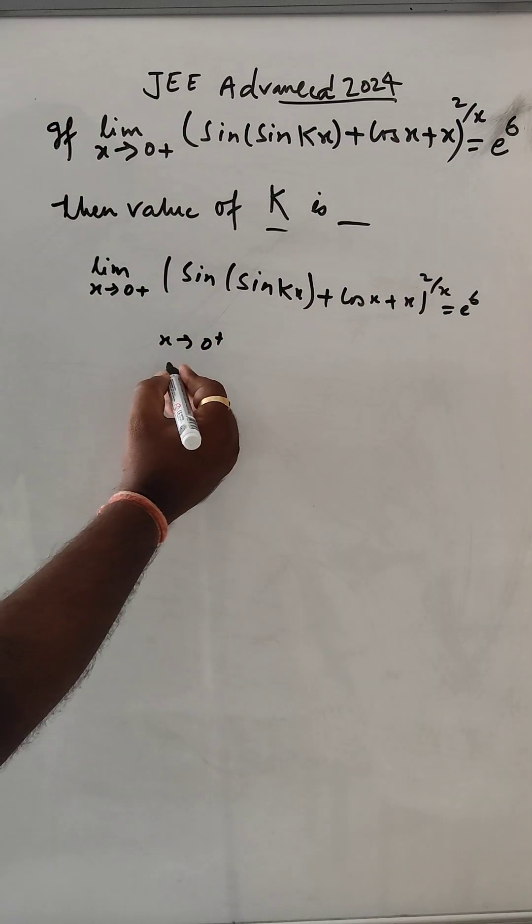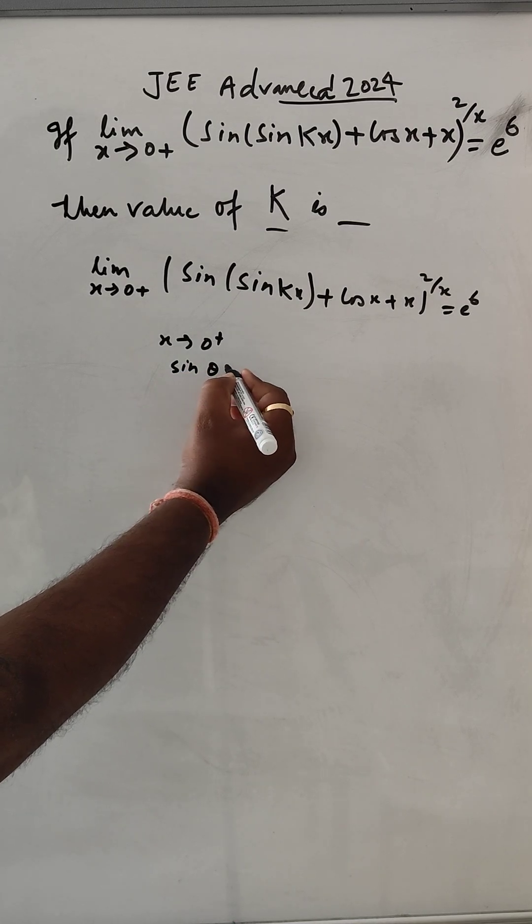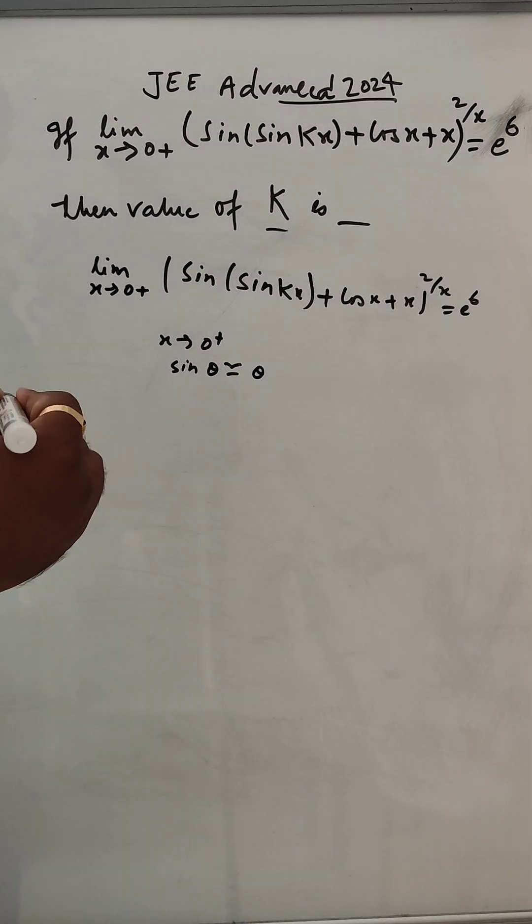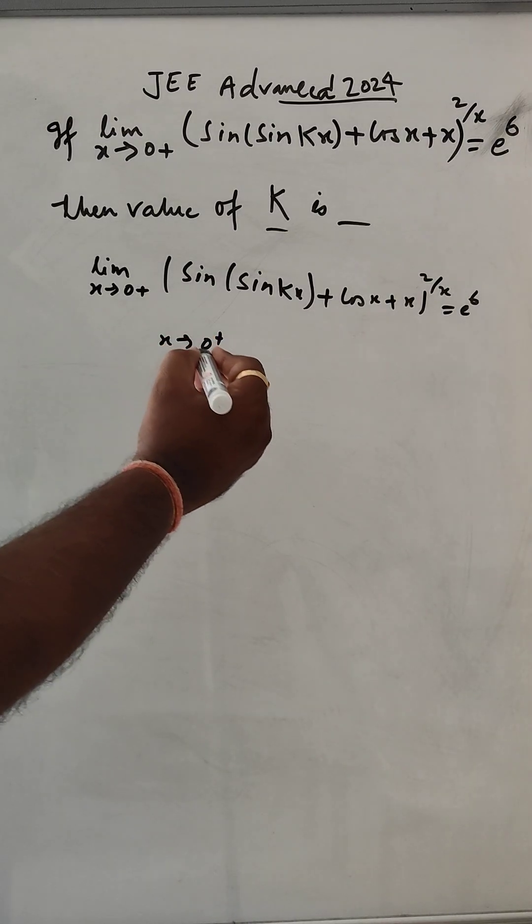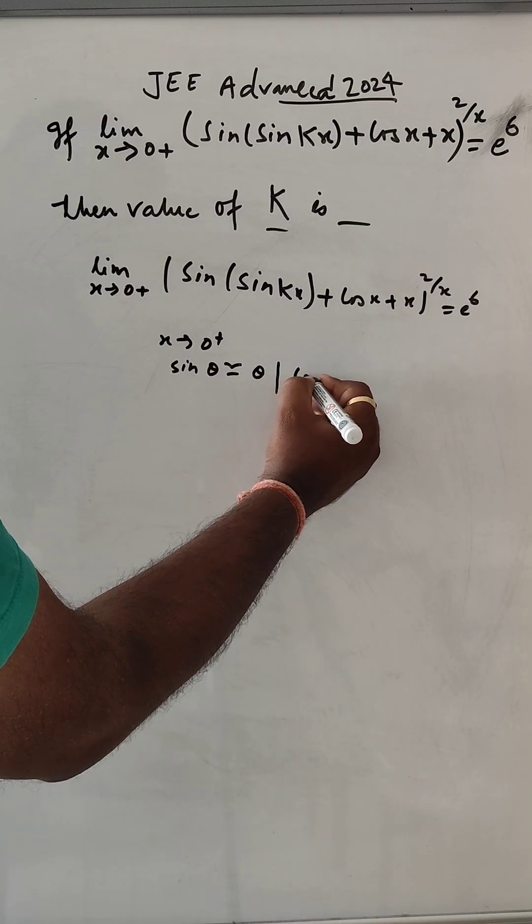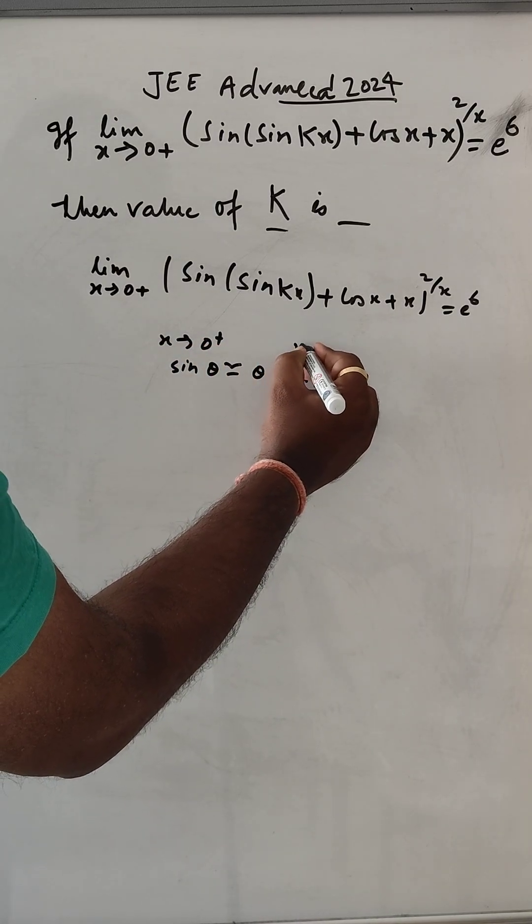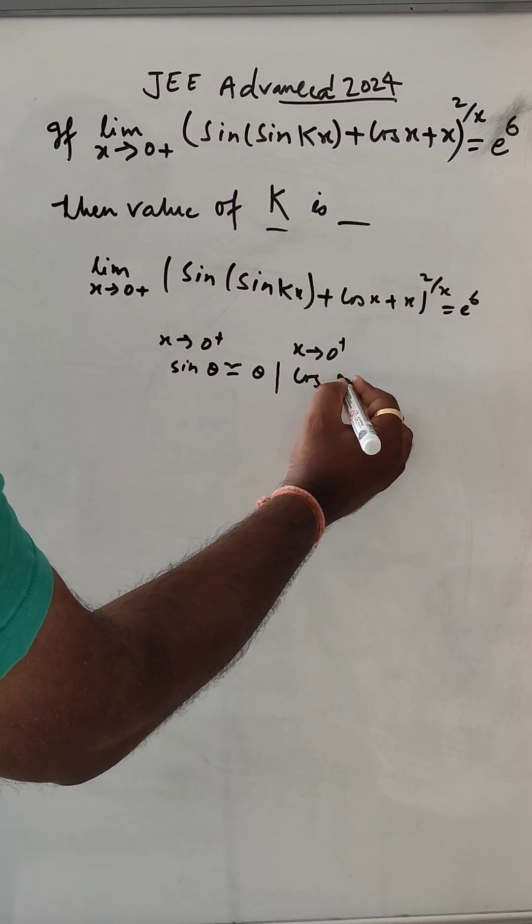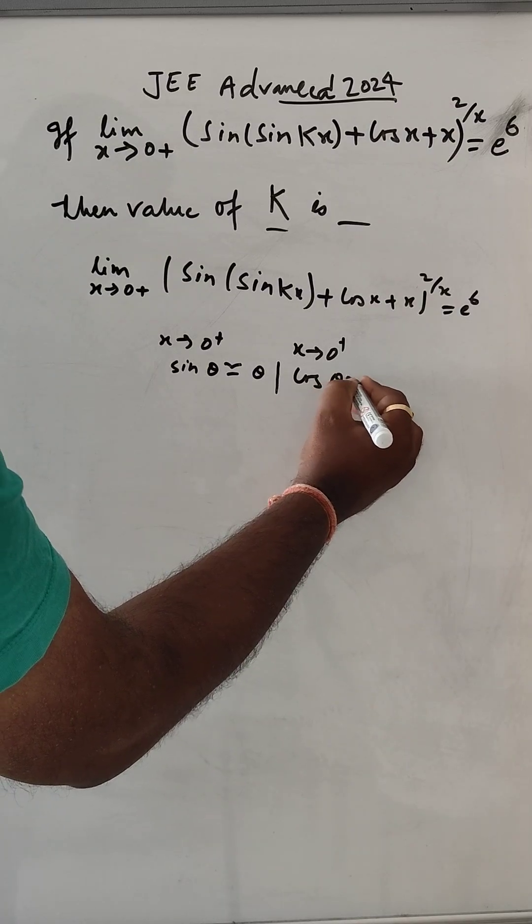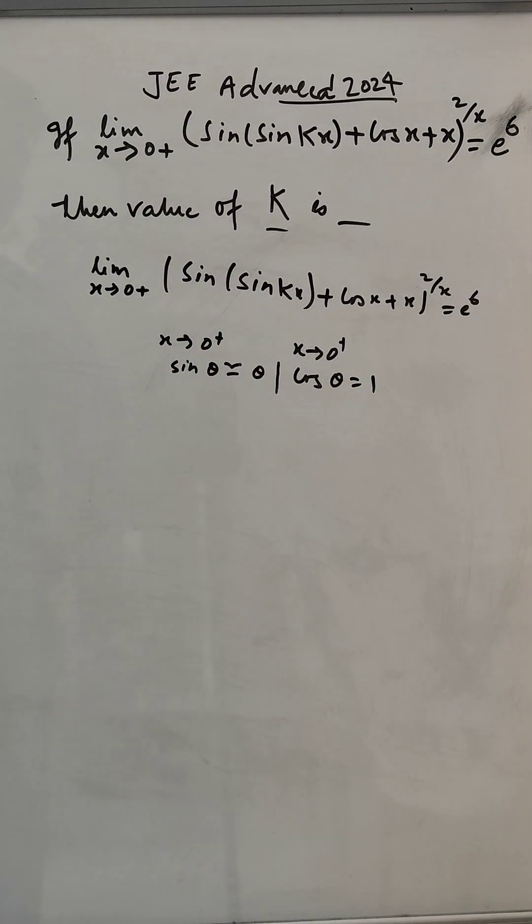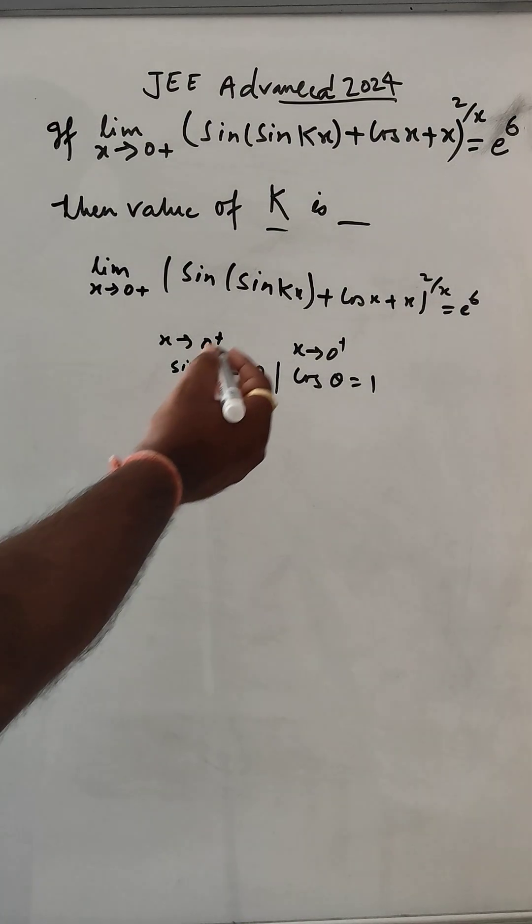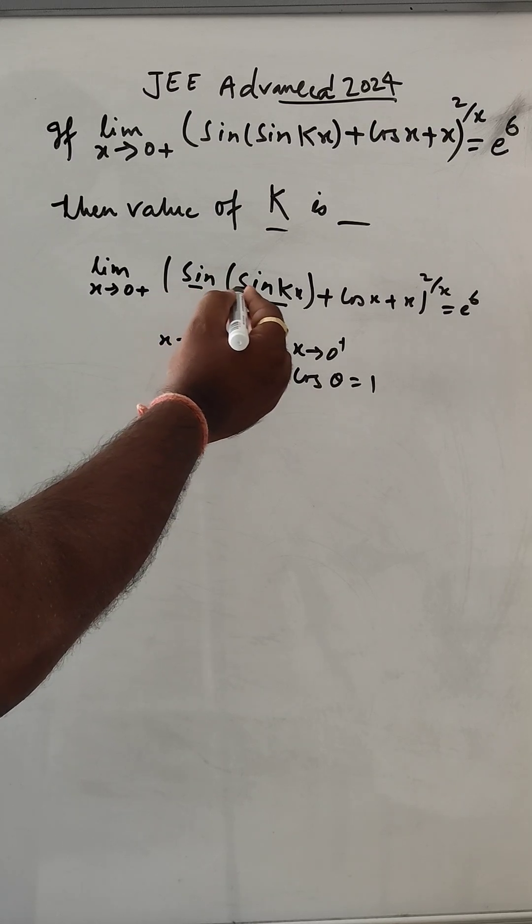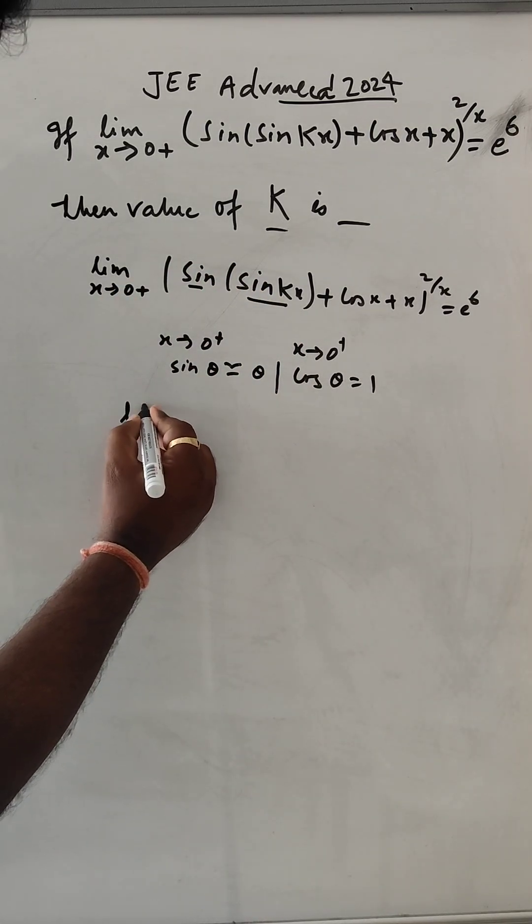And for cosine, if this is the case, cos θ will be 1 actually. So this will be kx again, sin(kx) will be kx, so we can write the limit.